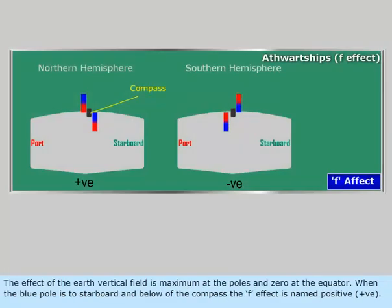The effect of the Earth's vertical field is maximum at the poles and zero at the equator. When the blue pole is to starboard and below of the compass, the F effect is named positive.